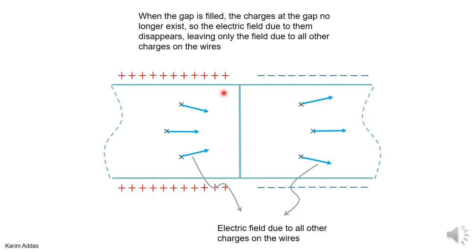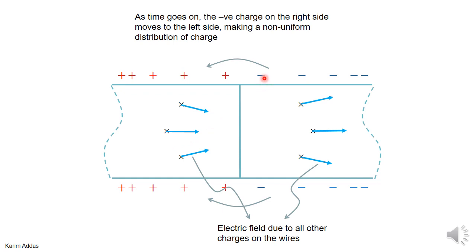Now if we fill the gap, the gap charges no longer exist, so the orange vectors disappear. The only thing that remains are the blue vectors — the electric field due to all other charges in the wire except those in the gap. Since we've made the connection and filled the gap, there are no gap charges, so the blue vectors are the only electric field at those representative points.